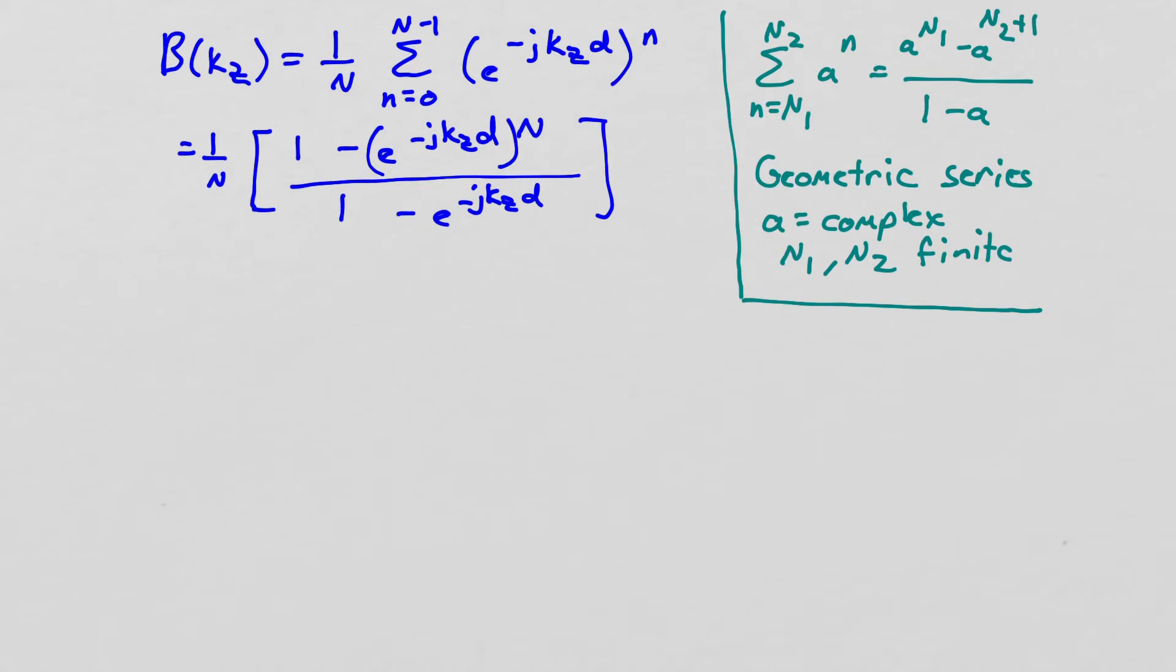So this is the summation that we're trying to compute to get our beam pattern. I pulled the 1 over n out front, and then we're just summing up a bunch of complex exponentials. Well, this sum over complex exponentials, if you'll recall, is simply a geometric series, and we have a convenient formula available to us that we use all the time in digital signal processing for the finite sum of a geometric.